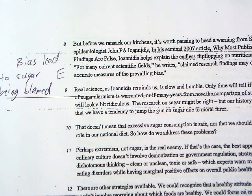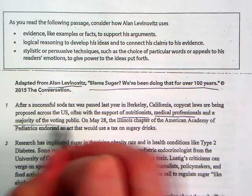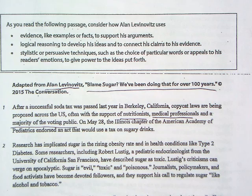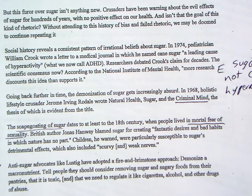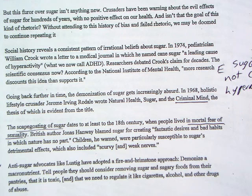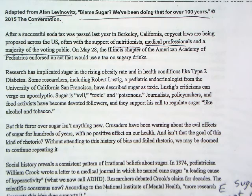Another approach on the evidence path is to say that even though current experts like nutritionists, medical professionals, and the majority of the voting public are against sugar, they have learned this from our nation's history of demonizing sugar. In the sixties, they talked about sugar leading to the criminal mind, and further back, people lived in mortal fear of sugar. The idea is that while current experts may be against sugar, the reason is not because of the science — it's because of hundreds of years of people being against sugar. It's important you phrase it that way; otherwise you'll be contradicting the thesis.